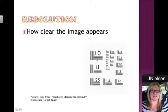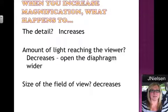You can see as you look at these numbers — this is pretty large, and as you follow around, they get smaller and smaller to the point where you can't even see what it's saying anymore. When you increase magnification — going from low power to high power — the detail increases because you're looking at it closer up. The amount of light reaching the viewer decreases, so when you switch to high power, chances are you're going to have to open the diaphragm wider. The field of view also decreases because we're looking at something closer up, so we actually see less of it.